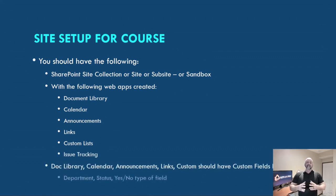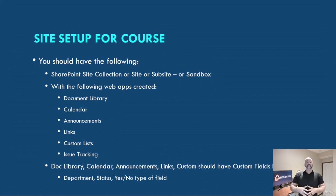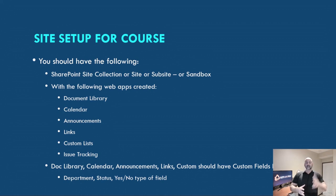In each document library, calendar, announcements, links, and custom list, you should have some custom fields like a department (which is a choice), status (could be a choice), and a yes-no type field. It doesn't matter if they're exactly identical to those, but I need you to have two or three fields, preferably choices, and some yes-nos in there — in all of those with the exception of issue tracking.